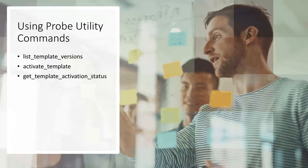To move newer versions of templates to production, we'll use some probe utility commands available for the MCS probe. You issue these commands in Admin Console. The List Template Versions command lists template versions for the entered profile type, and the output also indicates the version of a template in production. The Activate Template command moves a newer template version to production and migrates the existing configuration profile. Use the Get Template Activation Status command to determine when the activation has successfully completed.